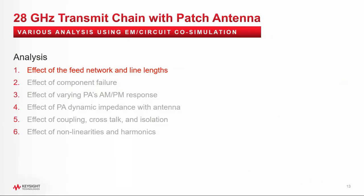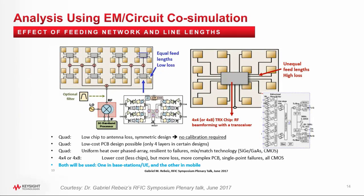Now in this new section, I will use the EM circuit co-simulation on various analyses and share with you some interesting and useful findings. Let me start with the effect of the feed networks and line lengths. This slide was extracted from Dr. Gabriel Rebe's RFIC Symposium plenary talk. The system on the top left uses more ICs and equal line lengths between the IC outputs and the antenna patches, requiring no calibration. But the system on the top right uses fewer chips and unequal length lines, resulting in higher loss and requiring calibration to make the system work.